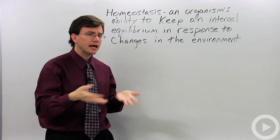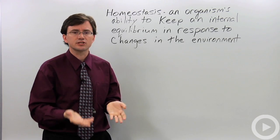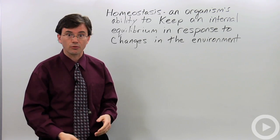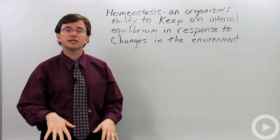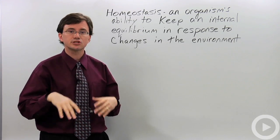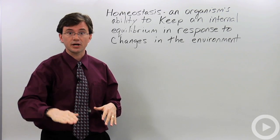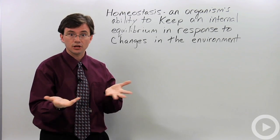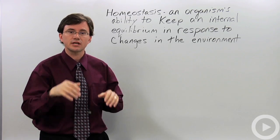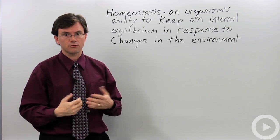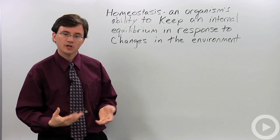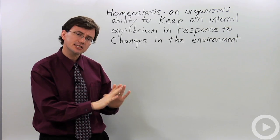Now that you understand homeostasis, this explains why you can easily become addicted to things like caffeine, cocaine, or tobacco — because they become part of your standard homeostasis. Your body adjusts to them. So if you don't have them, your body has trouble figuring out how to bring itself back to that standard internal state, and you start craving the caffeine, or cocaine, or whatever it is you've been adding to your system. That's the base concept of homeostasis.